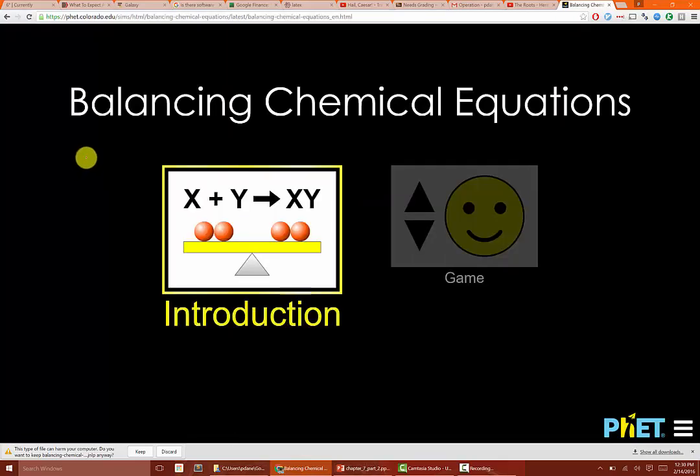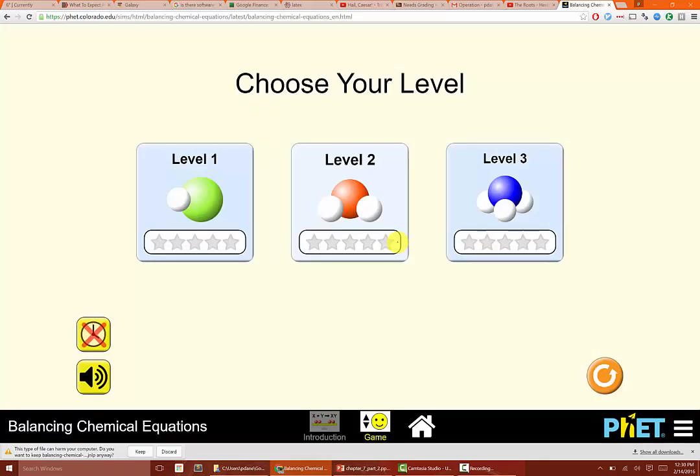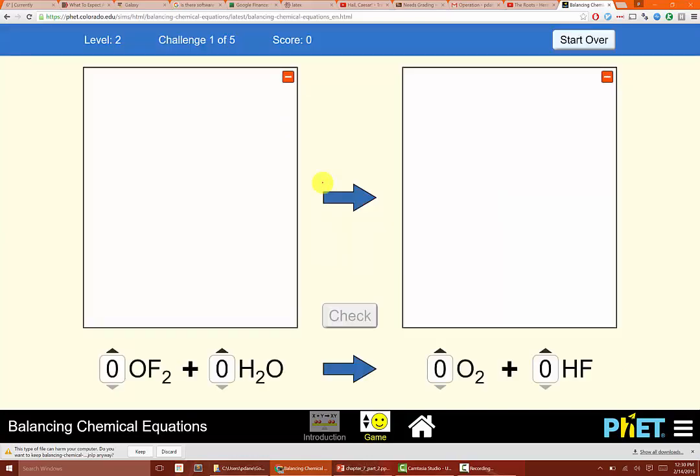So if you go to this site and you click on game, you can sort of pick easy equations to balance, moderately difficult, or more difficult equations to balance. And basically you just play along. So if we go to level two, the only thing I don't like about the game is that it sets all of the numbers to zero at the beginning, all of the numbers in front. You should really set them to one. So if we set them all to one, then it gives you this visual of the different atoms, and then you can adjust the numbers up and down to try to balance your equation.